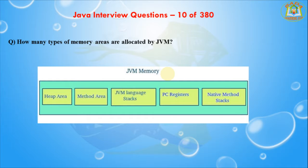The program counter register contains the address of the Java virtual machine instruction currently being executed. The native method stack contains all the native methods used in the application. The execution engine contains a virtual processor and an interpreter that reads the bytecode stream and executes the instructions. The JIT compiler is used to improve performance; it compiles the part of bytecode that has similar functionality at the same time, reducing the amount of time needed for compilation.